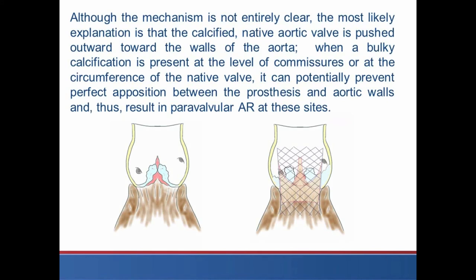Although the mechanism is not entirely clear, the most likely explanation is that the calcified native aortic valve is pushed outward toward the walls of the aorta. When bulky calcification is present at the level of a commissure or at the circumference of the native valve, it can potentially prevent perfect apposition between the prosthesis and the aortic walls, and thus result in paravalvular aortic regurgitation at these sites.